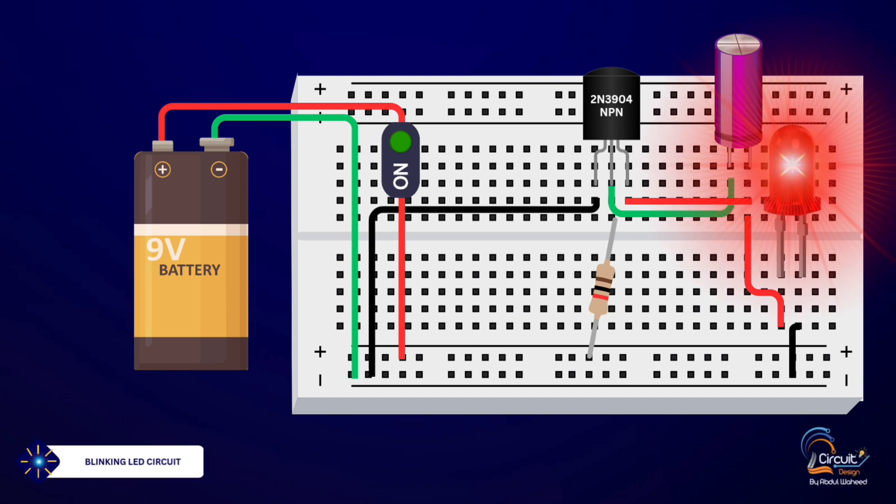Now when you power up the circuit, you should see the light emitting diode blinking. The capacitor charges and discharges, causing the transistor to switch on and off, which makes the LED blink.